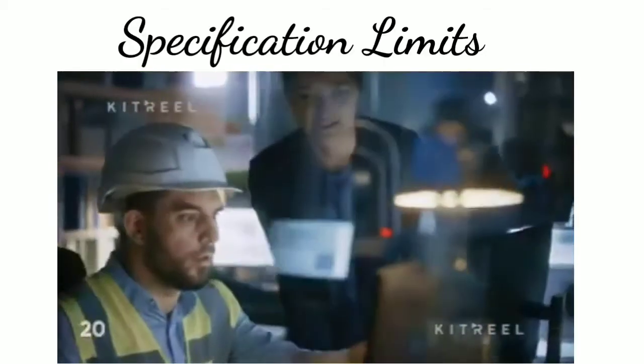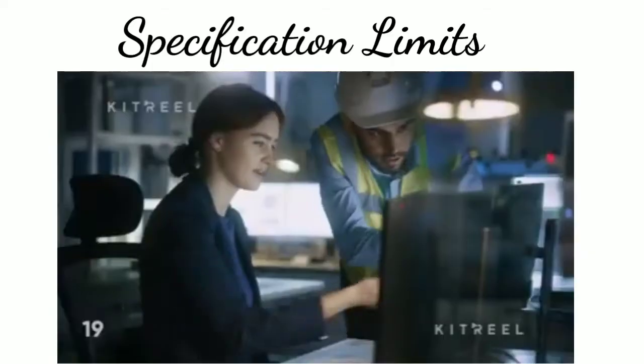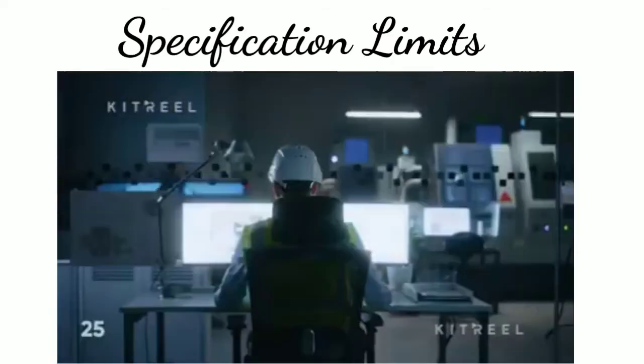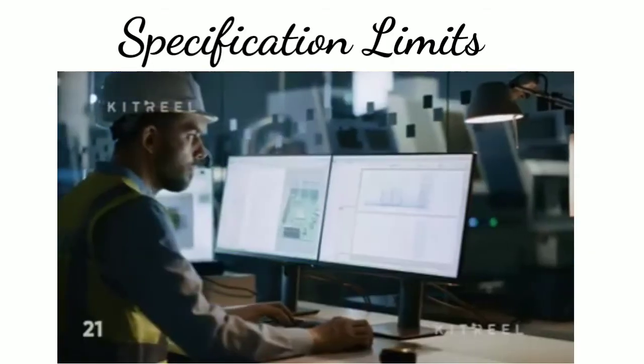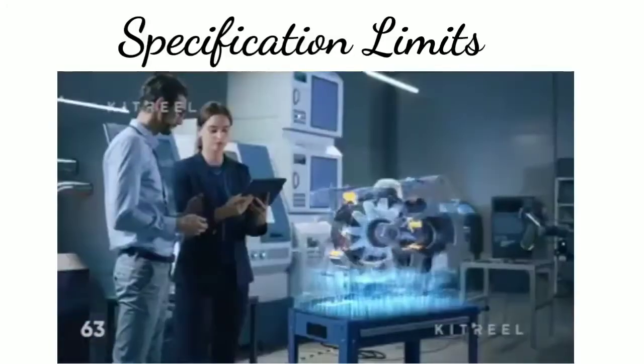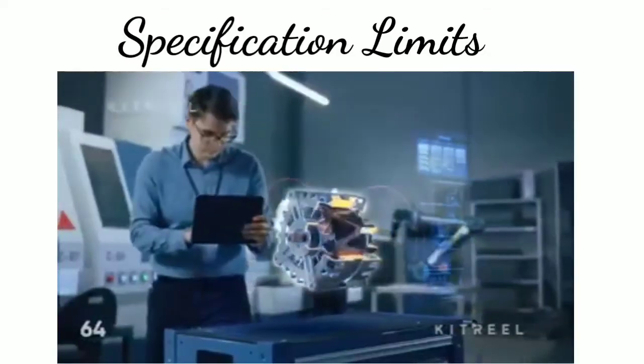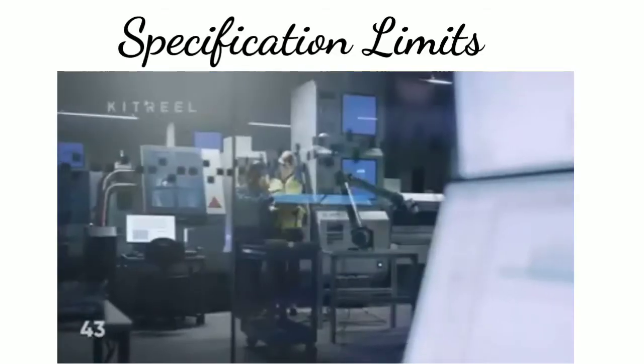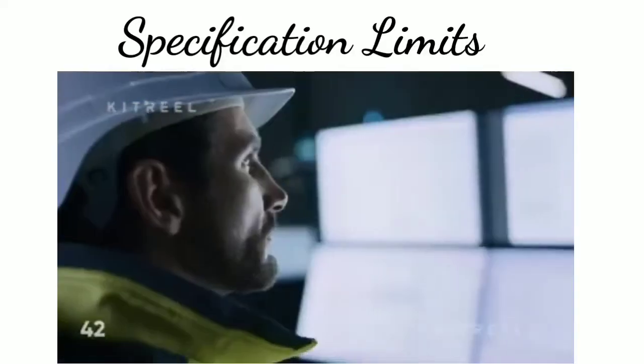So in simple terms, we can say that there are maximum and minimum variation limits for any product. So what do we call those limits? Specification limits. Now we can understand this with an example. This is our speaker. What are we doing? We are doing production.